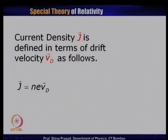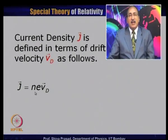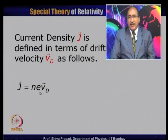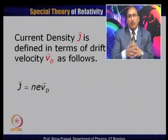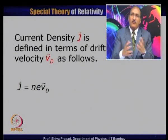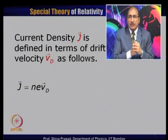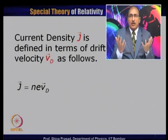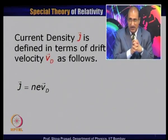Current density vector J is defined in terms of this drift velocity as follows: J equals n·e times drift velocity, where n is the total number of charge carriers per unit volume and e is the charge of each carrier. This equation defines the current density inside a metal or inside the conductor.